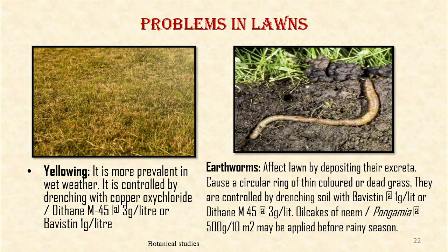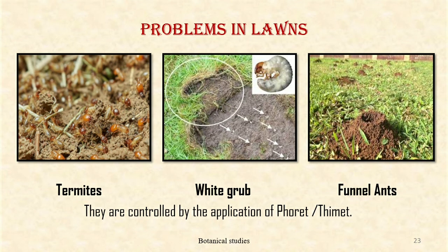Yellowing: It is more prevalent in wet weather. It is controlled by drenching with copper oxychloride or Dithane M45 at 3 g per litre, or Bavistin at 1 g per litre. Earthworms: Earthworms affect lawns by depositing their excreta, causing a circular ring of thin-colored or dead grass. This can be controlled by drenching soil with Bavistin at 1 g per litre or Dithane M45 at 3 g per litre. Oil cake of neem or pongamia at 500 g per 10 m² may be applied before any season. Termites, white grubs and funnel ants are controlled by application of Forat or Thimet.